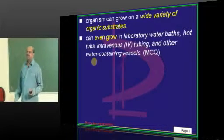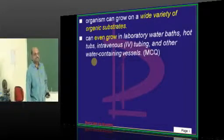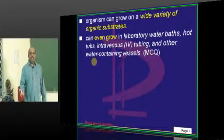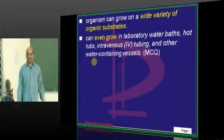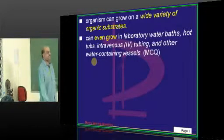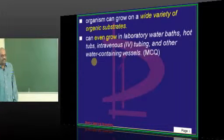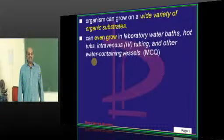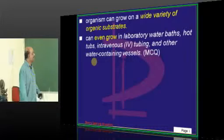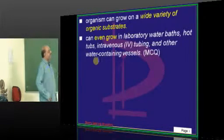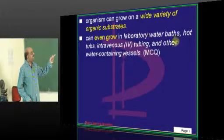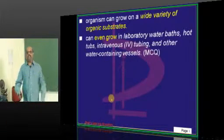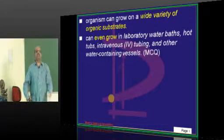Any type of organic matter — whether it is halwa, upma, or idli — anything is fine for Pseudomonas to eat. Just like a classmate who says don't ask me if I like the food when someone else is paying — anything is okay. Pseudomonas is like that: a wide variety of substrates. That is why whether it is a laboratory water bath, a hot tub, IV tubing, or water-containing vessels, anywhere Pseudomonas can grow because its food requirement is very minimal.